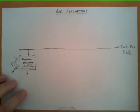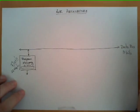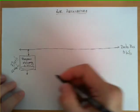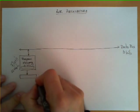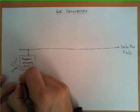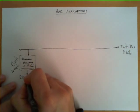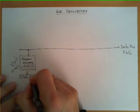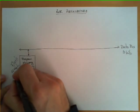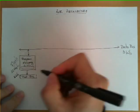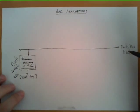From this program memory, what we obtain are the instructions to be executed by the rest of the architecture. Once we get an instruction, this instruction is stored in a special register called the instruction register, which also has 16 bits to load the data that comes from that memory.